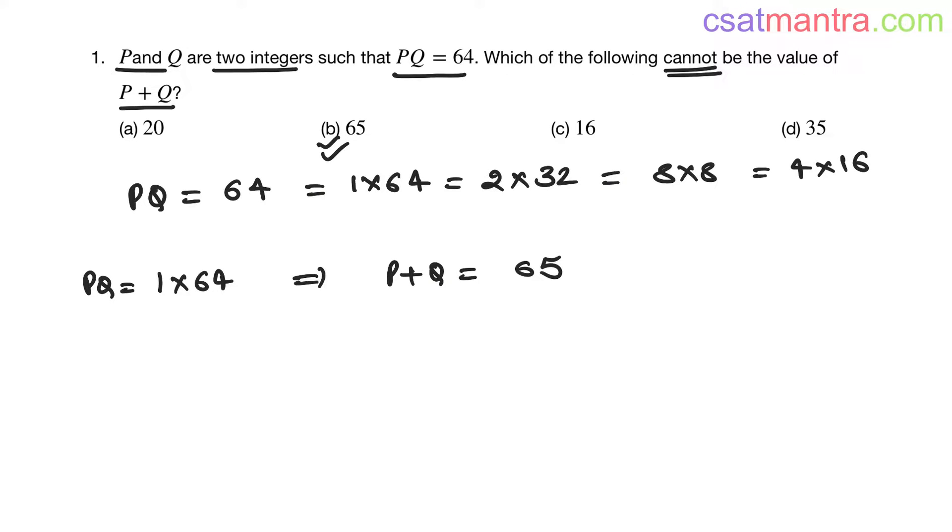If I take PQ as 2 into 32, now P plus Q would be 34, my friends.